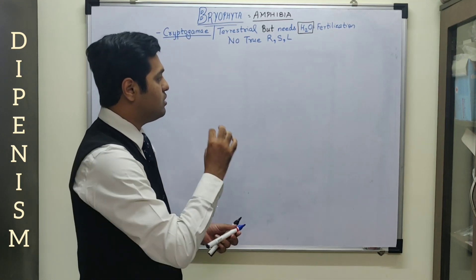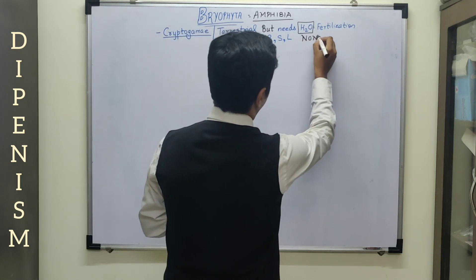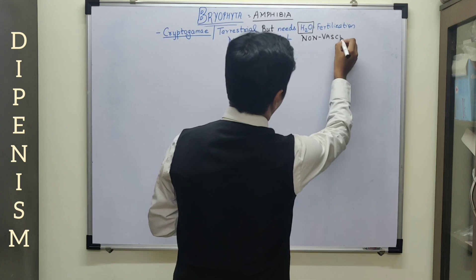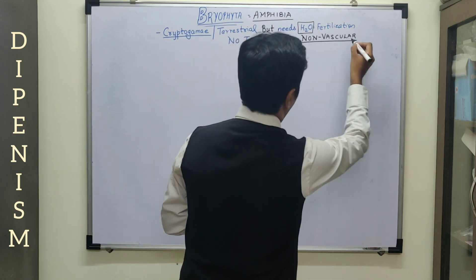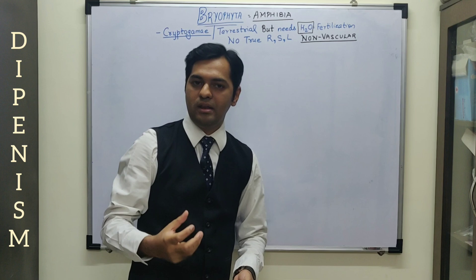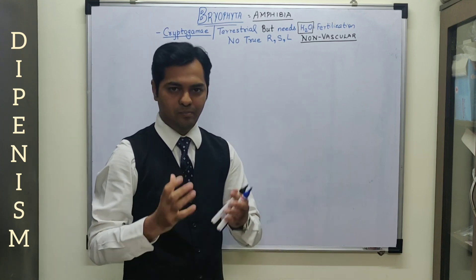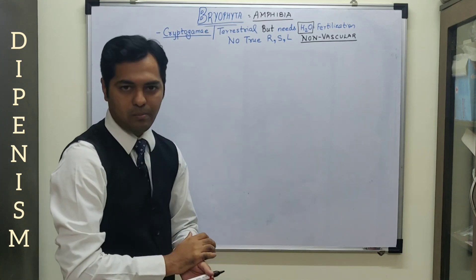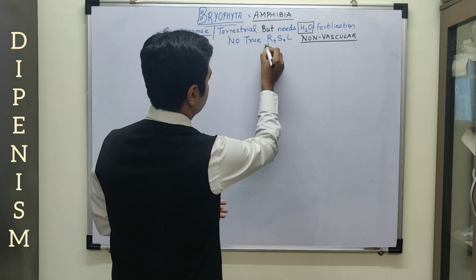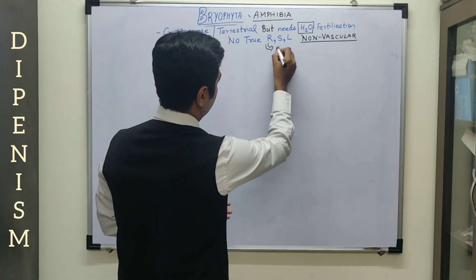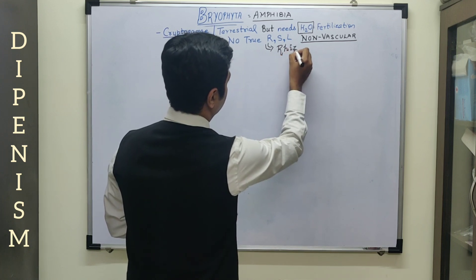Thus, these plants are considered as non-vascular plants. That means the vascular tissues are going to be absent. And the vascular tissues are mainly the xylem and the phloem. So just like algae, these are also non-vascular plants. In fact, the false roots which are present in them are known as rhizoids. Remember this terminology — the false roots in bryophytes are called rhizoids.